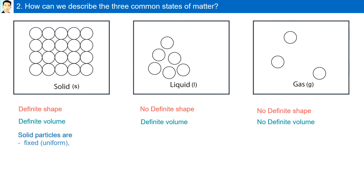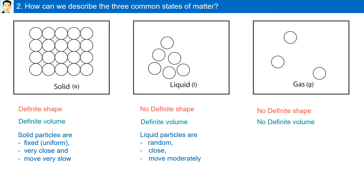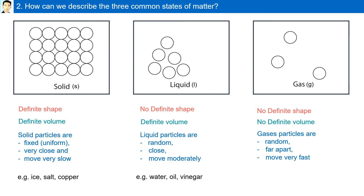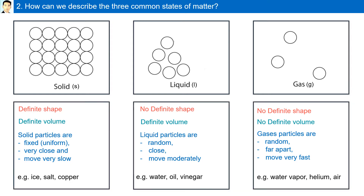Solid particles are fixed, uniform, very close together, and move very slowly. Liquid particles are random, close, and move moderately. Gas particles are random, very far apart, and move very fast. Examples of solids are ice, salt, and copper. Examples of liquids are water, oil, and vinegar. Examples of gases are water vapor, helium, and air.